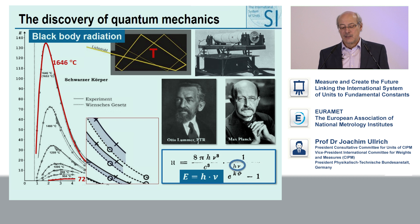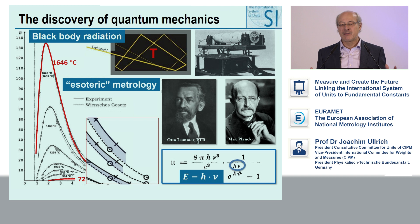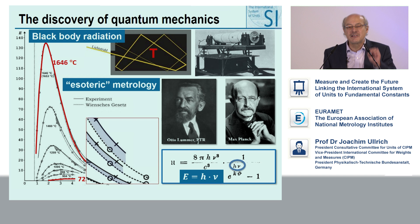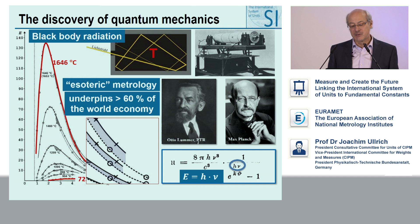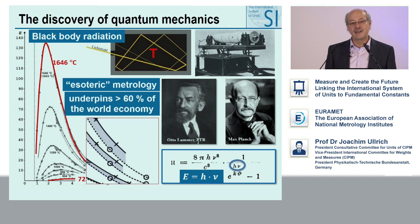What started as very esoteric metrology — people looking at a very specific effect, black-body radiation, that nobody in industry was ever interested in, looking at a small part of the wavelength spectrum and finding a tiny difference — out of that emerged quantum mechanics. And quantum mechanics today underpins more than 60% of the world economy. So you can see that basic metrology can create a huge impact, which is very important for our anticipation today.